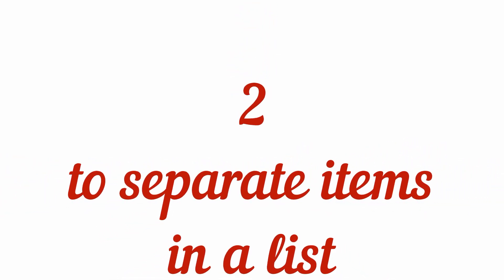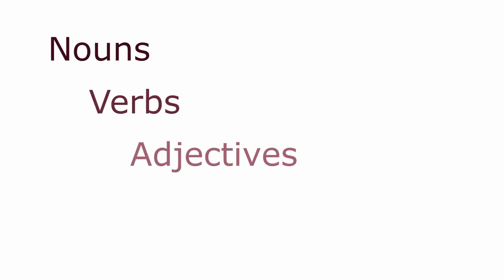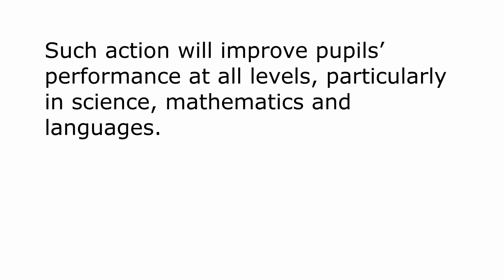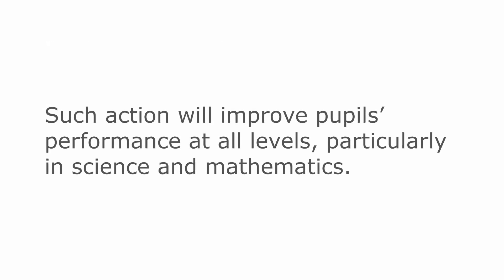Secondly, we need commas to separate items in a series or lists of words — for example, nouns, verbs, adjectives, phrases, clauses, and other words. For example: 'Such action will improve pupils' performance at all levels, particularly in science, mathematics, and languages.' Here we have three items — science, mathematics, and languages — so we separate all of them with commas. Remember that we do not place a comma if there are only two items in a list: 'Such action will improve pupils' performance at all levels, particularly in science and mathematics.' We have only two items, so there is no need for a comma.